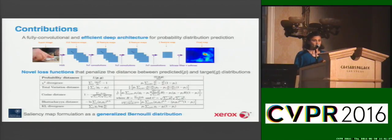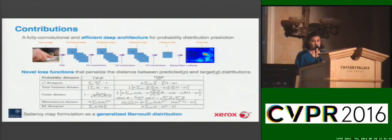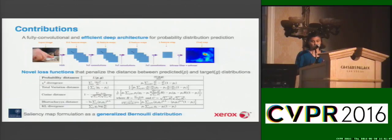This entire model, instead of being trained using regression losses such as Euclidean or Huber, is trained in a novel framework using probability distances such as chi-square, total variation, Bhattacharyya, and Pearson distance. We also compare it with KL divergence, which has very recently been used to train such models for attention.